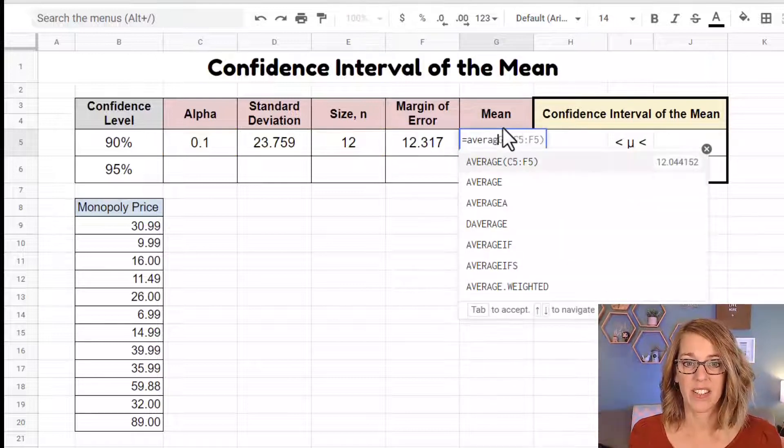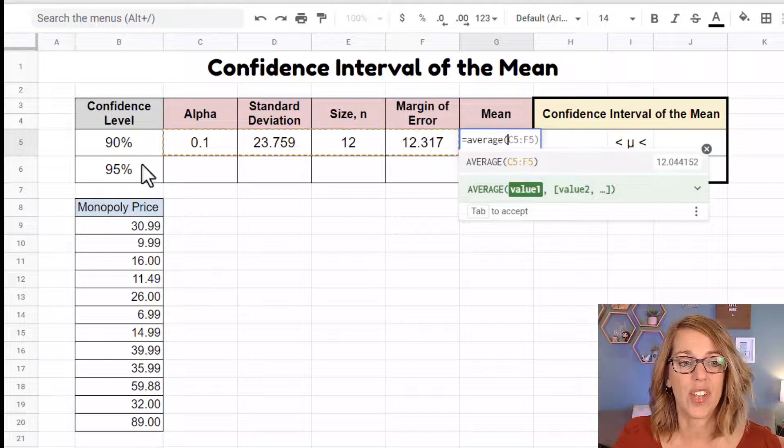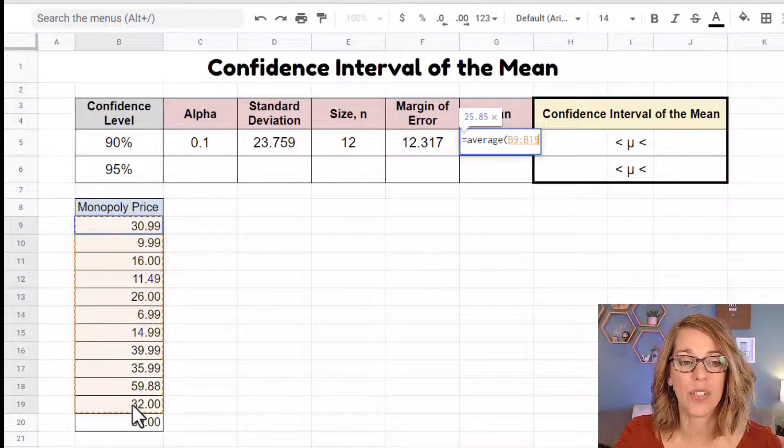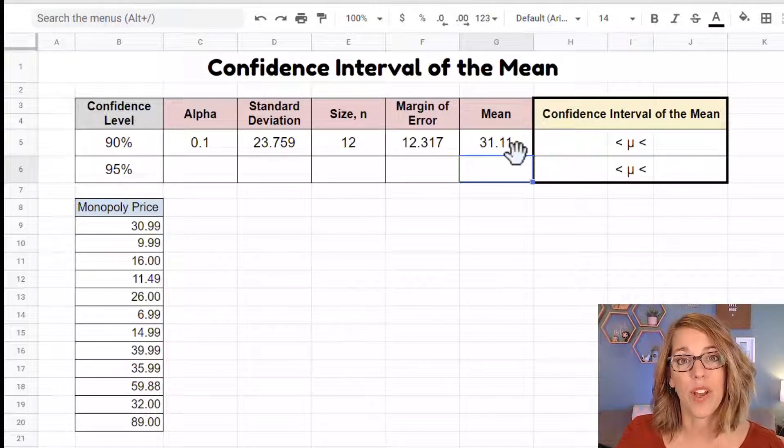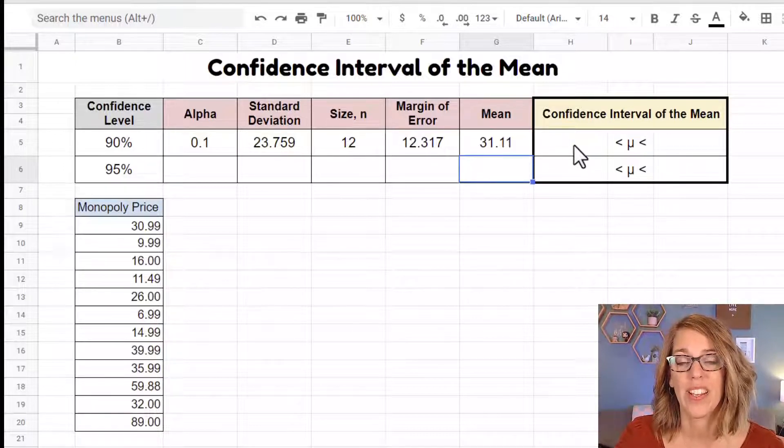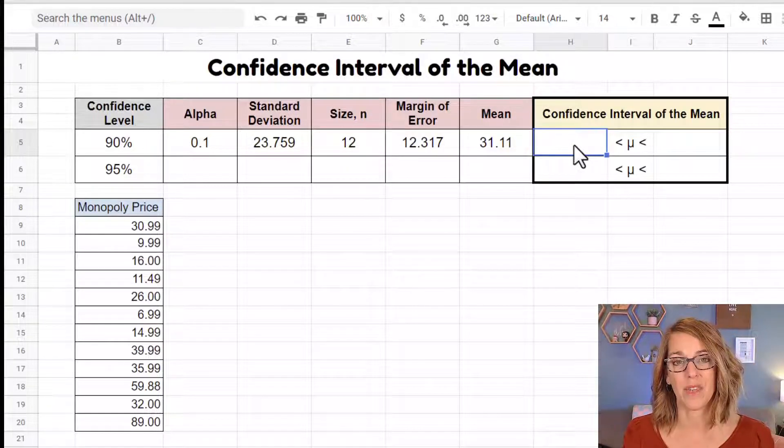The mean in spreadsheets is average. And I'm again going to click, hold and drag through my data and hit enter. And I have $31.11 to come up with my confidence interval.